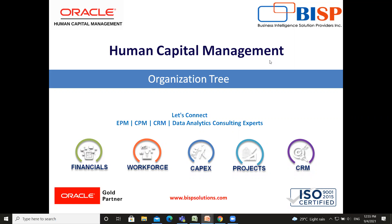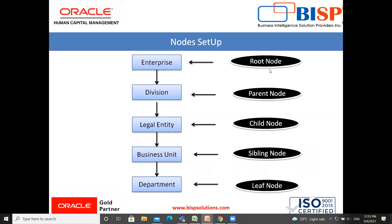Let me tell you why an organization tree is used. An organization tree is a graphical representation of hierarchical data, such as the structure of your organization, and it is also used to secure HCM data. You can create an organization tree with the node set up, and you can select any type of organization for the top node and for the child node, but only one top level node.